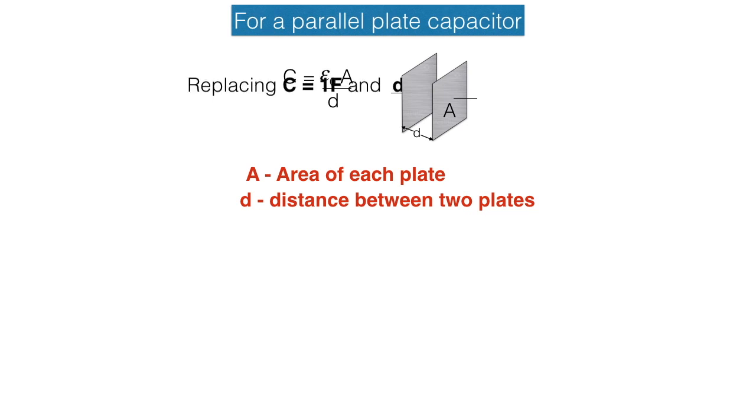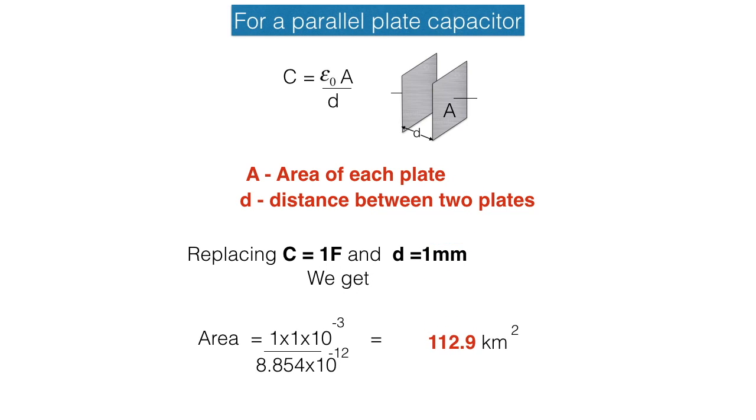Here, for one farad capacitor we will replace C with the value of one farad and the distance we will assume that the distance between two plates would be 1 mm. We will get value of area as 112.9 km².